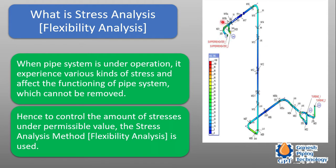In piping, the start point is where the flow enters the pipe and the end point is the termination point where the flow leaves. There are supports at particular intervals where the pipe is supported. The piping should be flexible enough to keep the stresses in the pipe under a permissible limit so that the pipe does not fail.